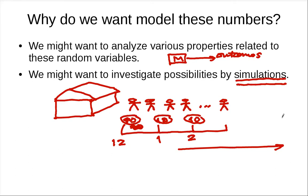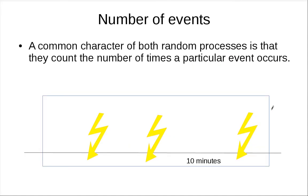We'll see this soon when we perform some experiments in class. These two examples share a common character: these two experiments or phenomena count the number of times some particular event occurs.